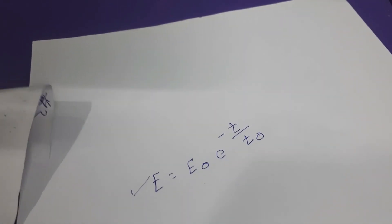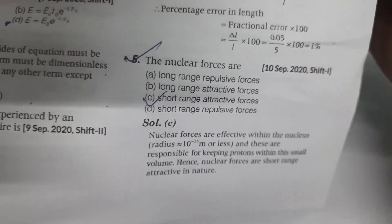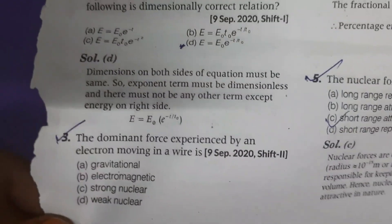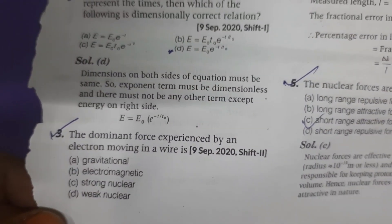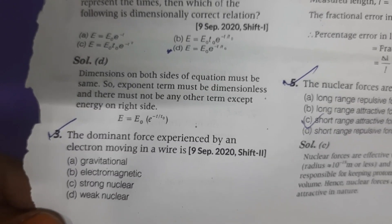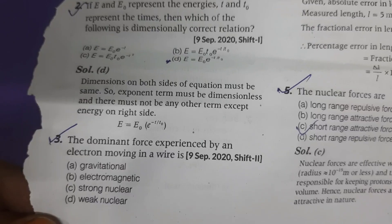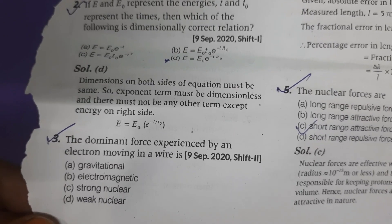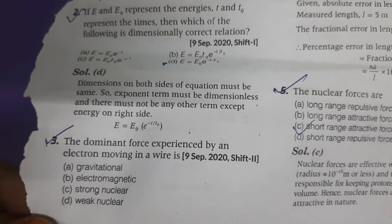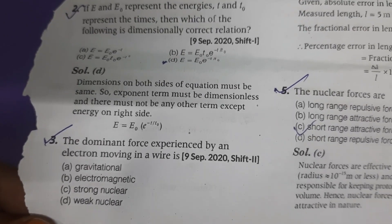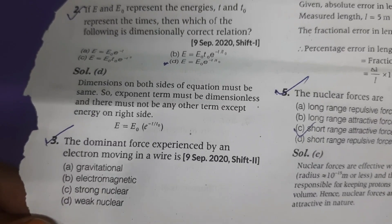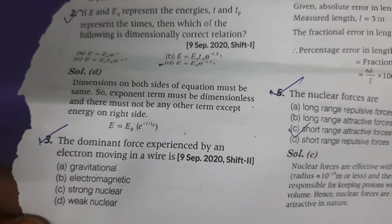The third question: what is the dominant force experienced by an electron moving in a wire? Whenever an electron moves in a wire, it produces a magnetic field around it, so it completely belongs to electromagnetic force. Option B is the right answer.